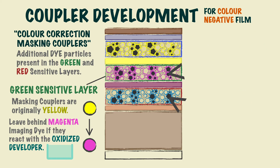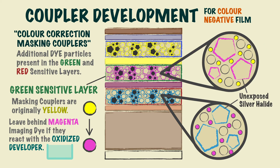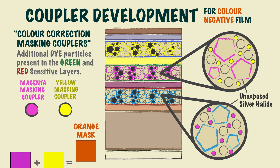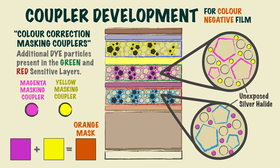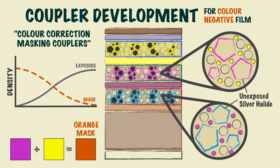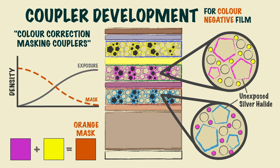However, the masking couplers near the unexposed silver halide don't change at all, and remain as their original yellow and magenta masking coupler structures. The combination of these causes an orange mask to cover the film, since magenta and yellow together create orange. Therefore, where the exposure or density of the film goes up, the masking effect goes down. These masking couplers help to correct brightness and saturation errors when the film is printed or scanned.